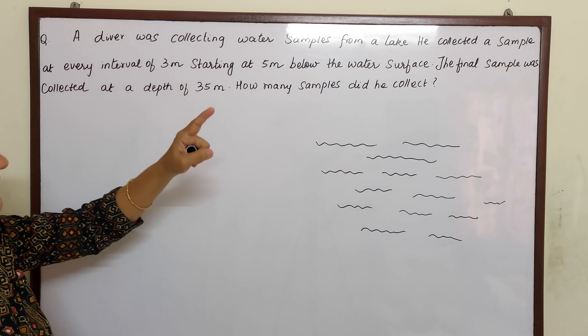Let this be a lake, children. A diver was collecting water samples. He collected a sample at every interval of 3 meters — that means he was going 3 meters down, collecting one sample, then going again 3 meters down and collecting another sample. Starting at 5 meters below the water surface.